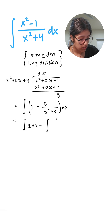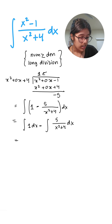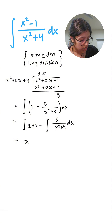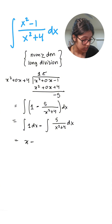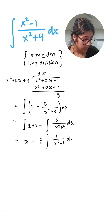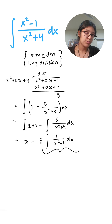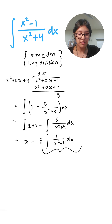We split it into: integral of 1 dx minus integral of 5/(x² + 4) dx. The integral of 1 dx is just x. We take the 5 out because it's a constant, giving us 5 times the integral of 1/(x² + 4).